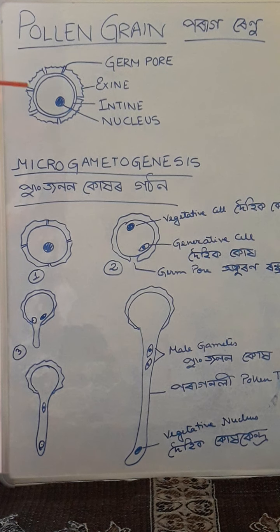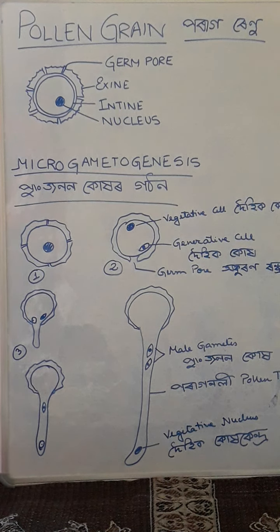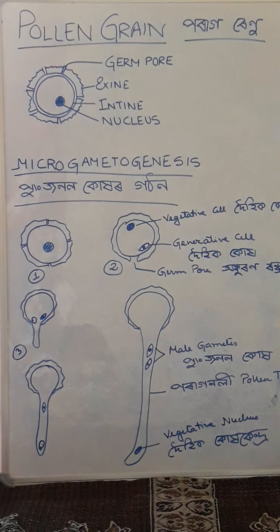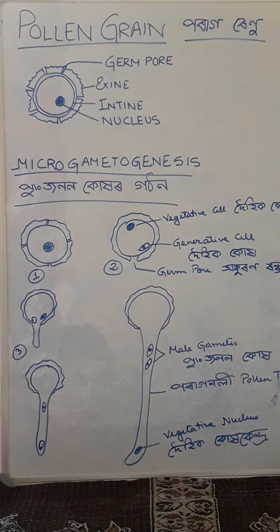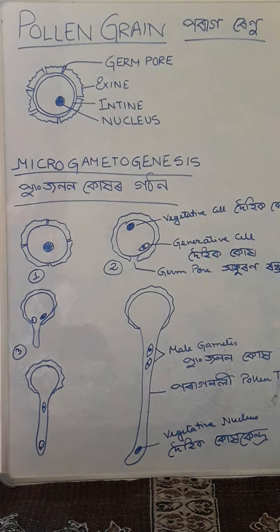At the center, the nucleus layer is continuous except at one point where there is a gap — that gap is called the germ pore.